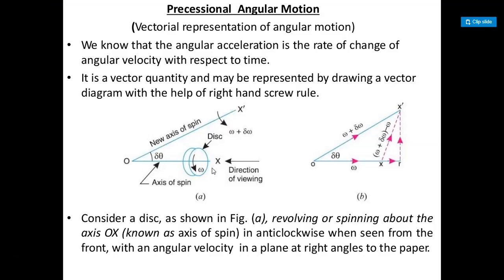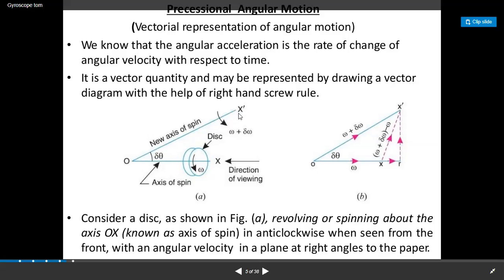If there is no gyroscopic balancing, then the body which is moving changes its place or changes the angle — called delta theta — and makes a new axis of spin x-dash. The angular velocity will also change and is called omega plus delta omega. Thus, acceleration can occur due to the change in direction of the rotating body. We can generate the vector of x, vector of x-dash, and change in velocity. The change in velocity is x-dash, which equals (omega + delta omega) minus omega.